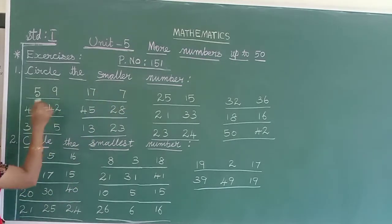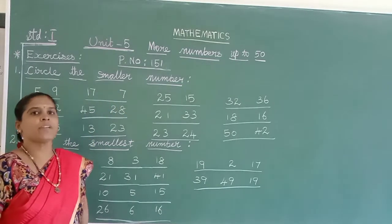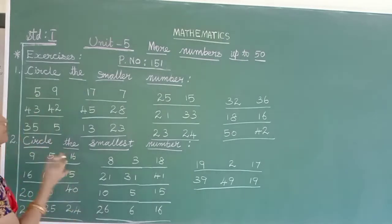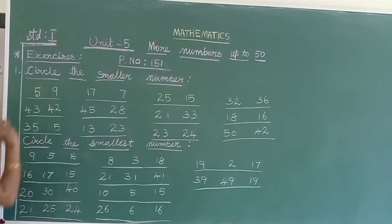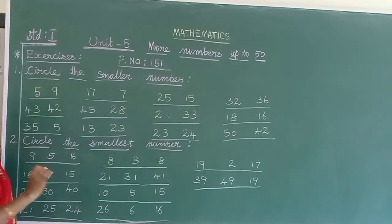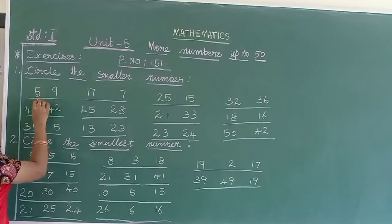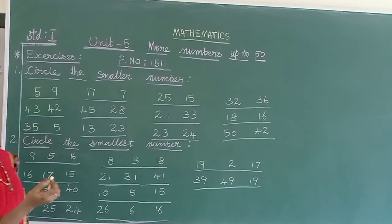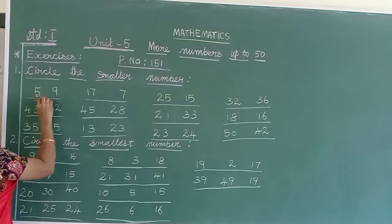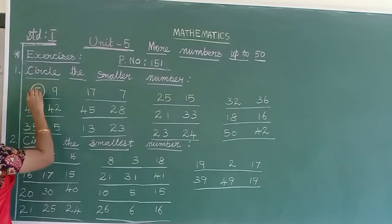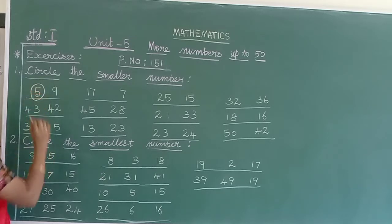Between the two numbers we should select the smaller one and circle it. 5 and 9 — which one is smaller? Yes, 5 is smaller than 9. So we should circle 5.